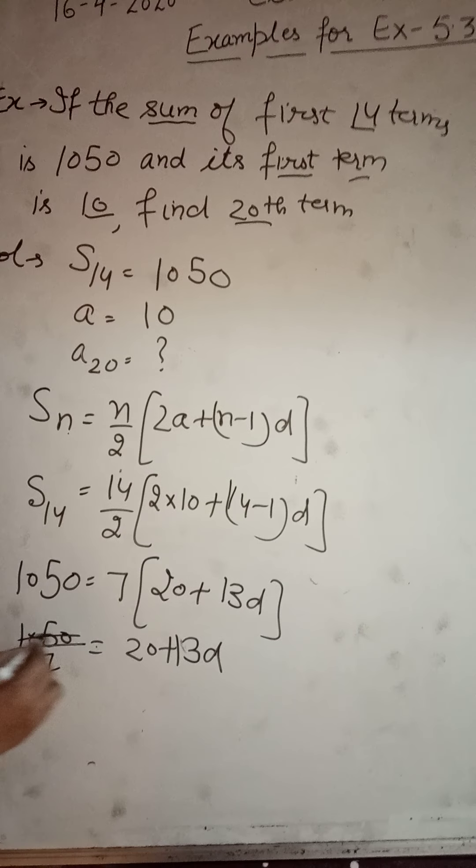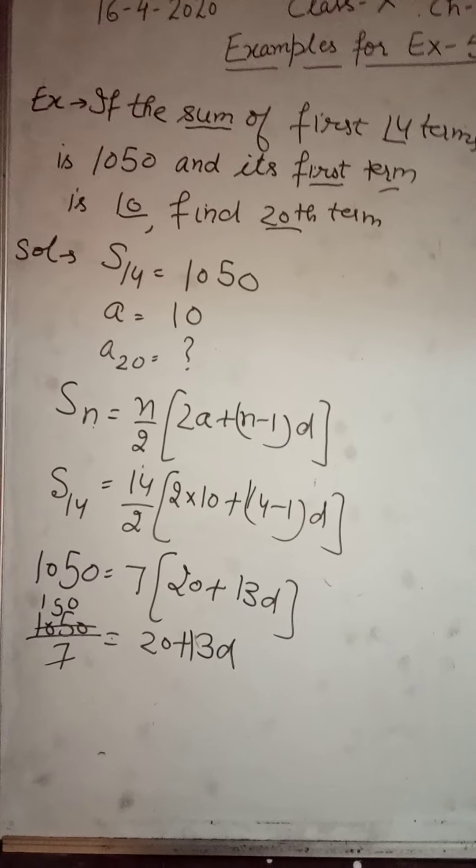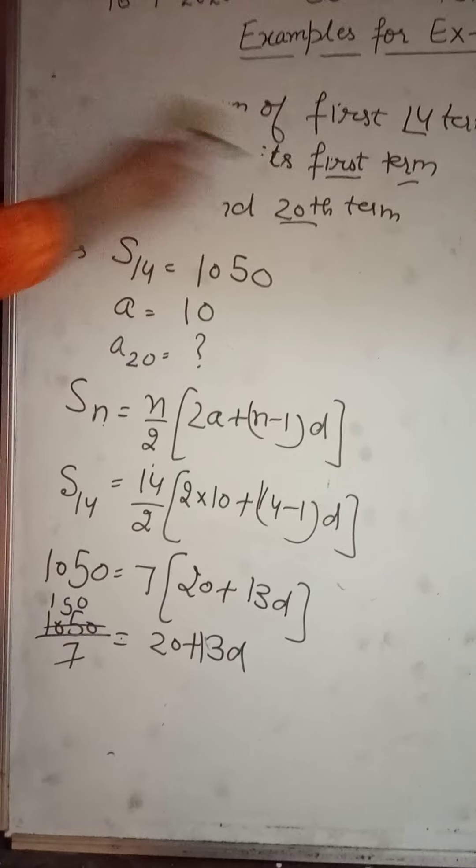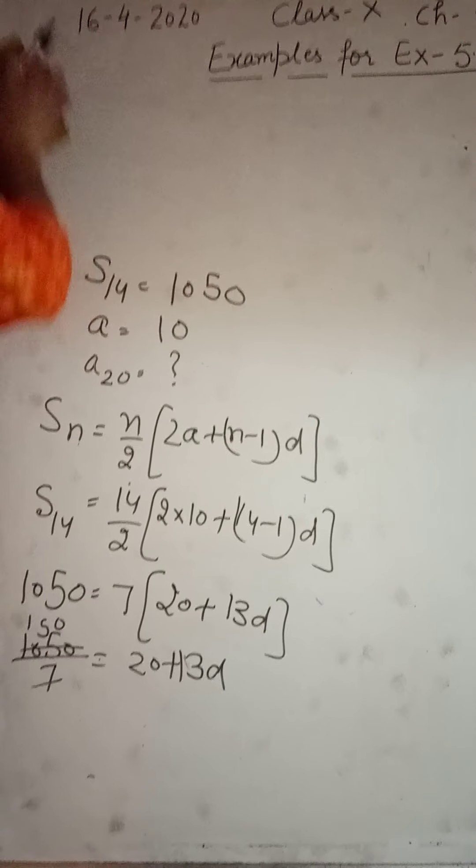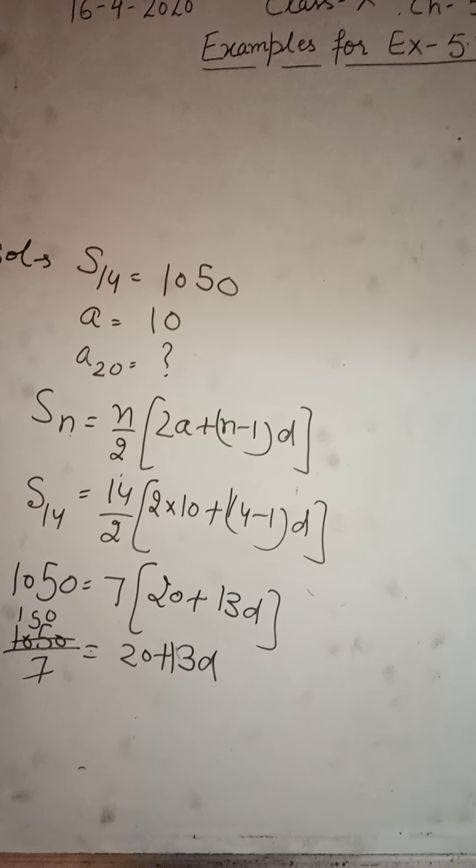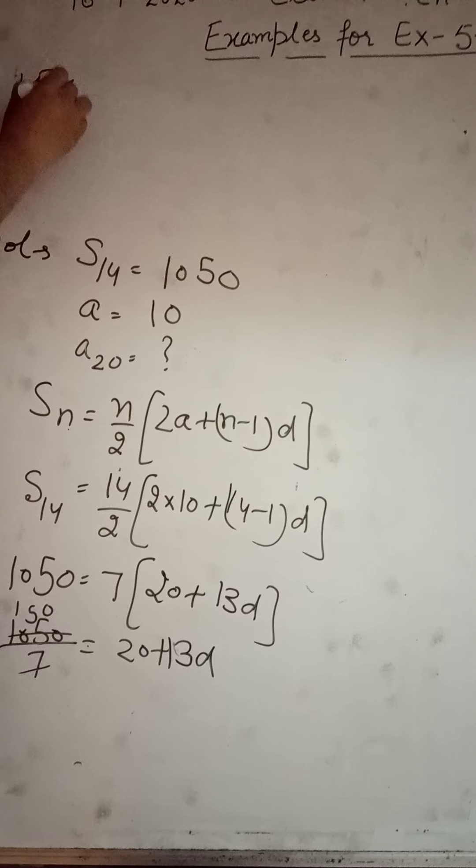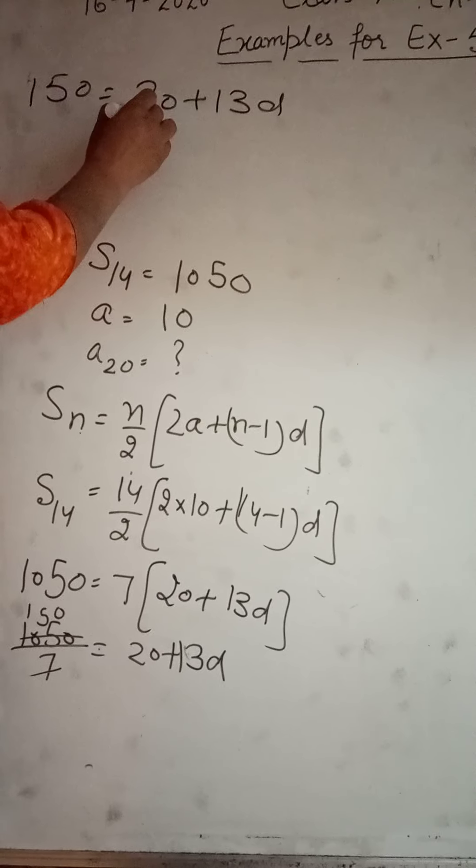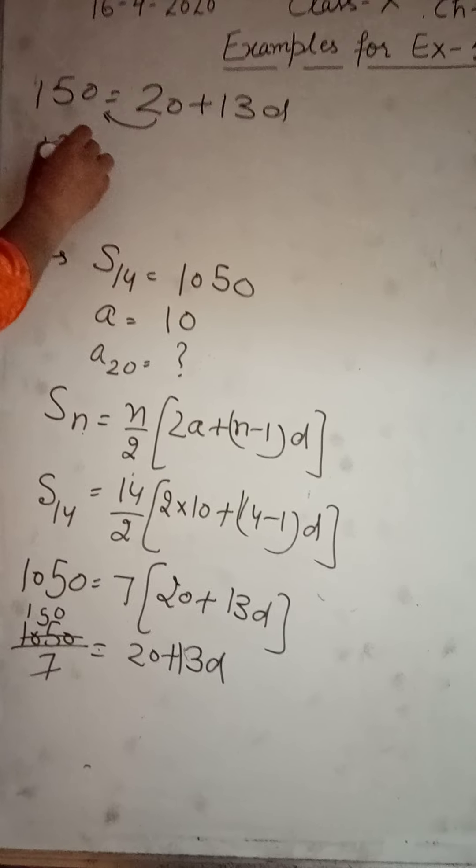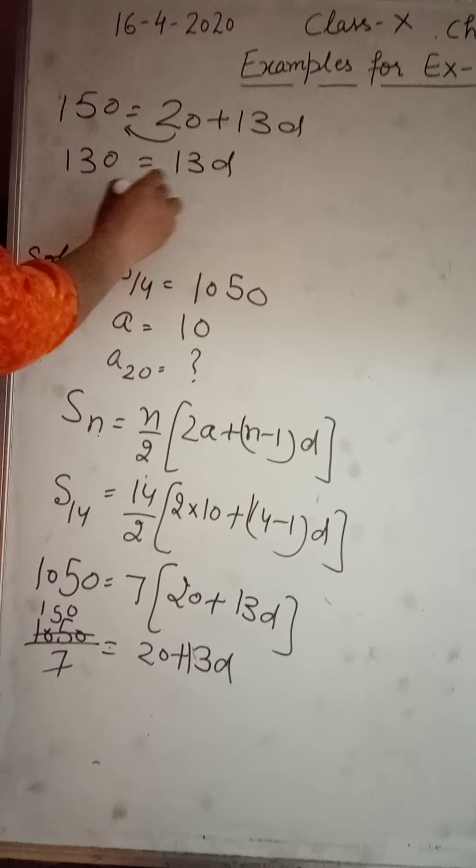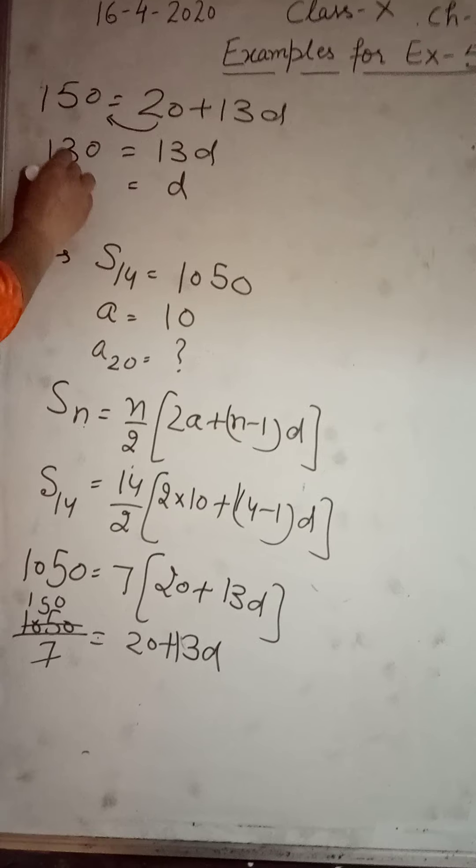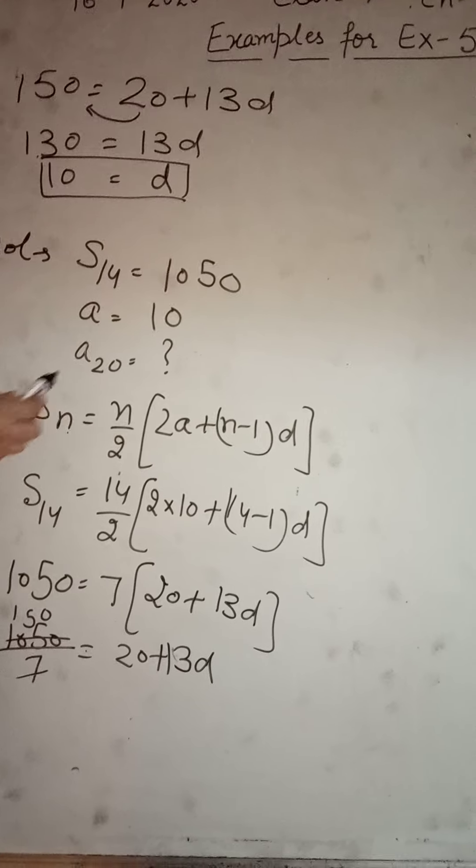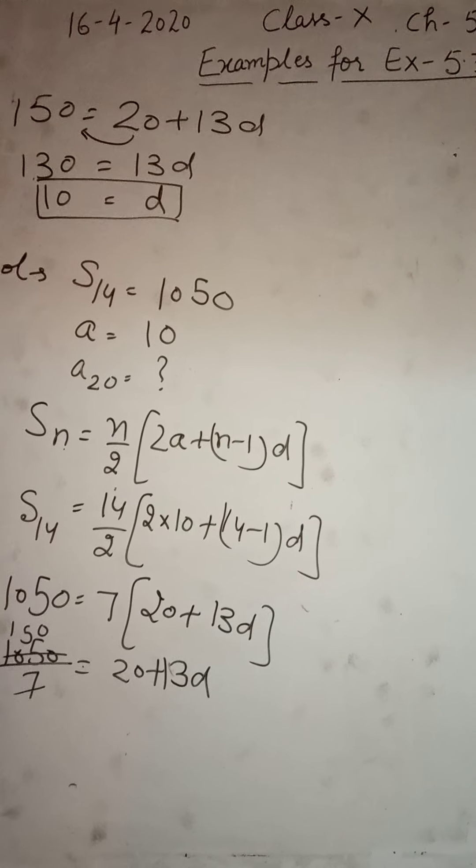So it gives us 7 ones and 7 fives, 150. Now what we have obtained is 150 equals to 20, 13d. Now shifting this term to this side, it will be 130, 13d. So we will get d as 10. Now in our question they were saying find out a_20. Quickly note it down.